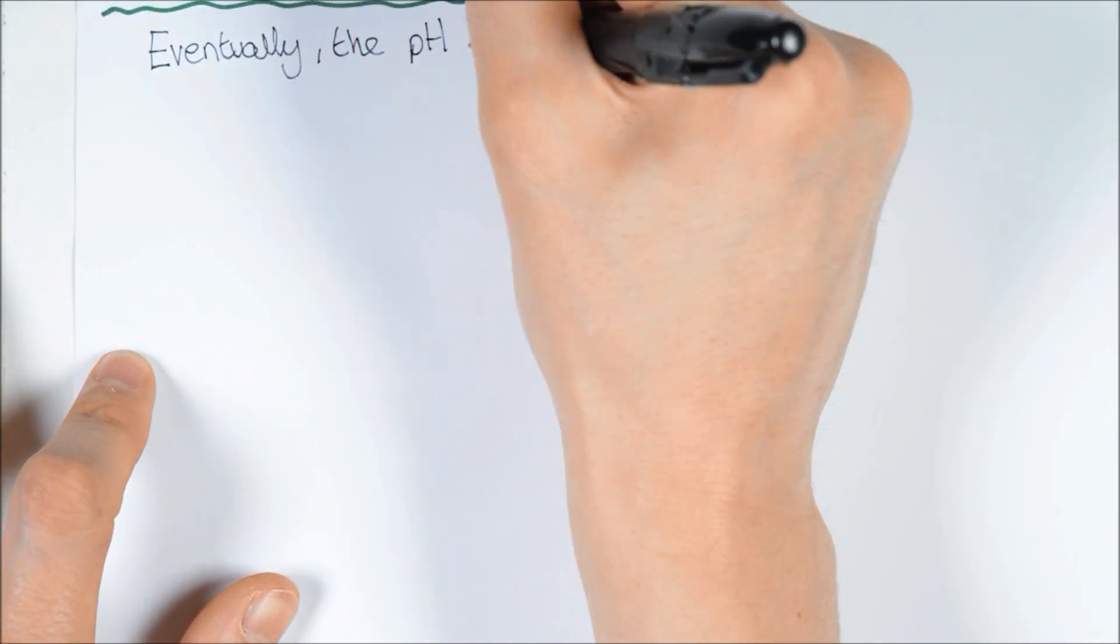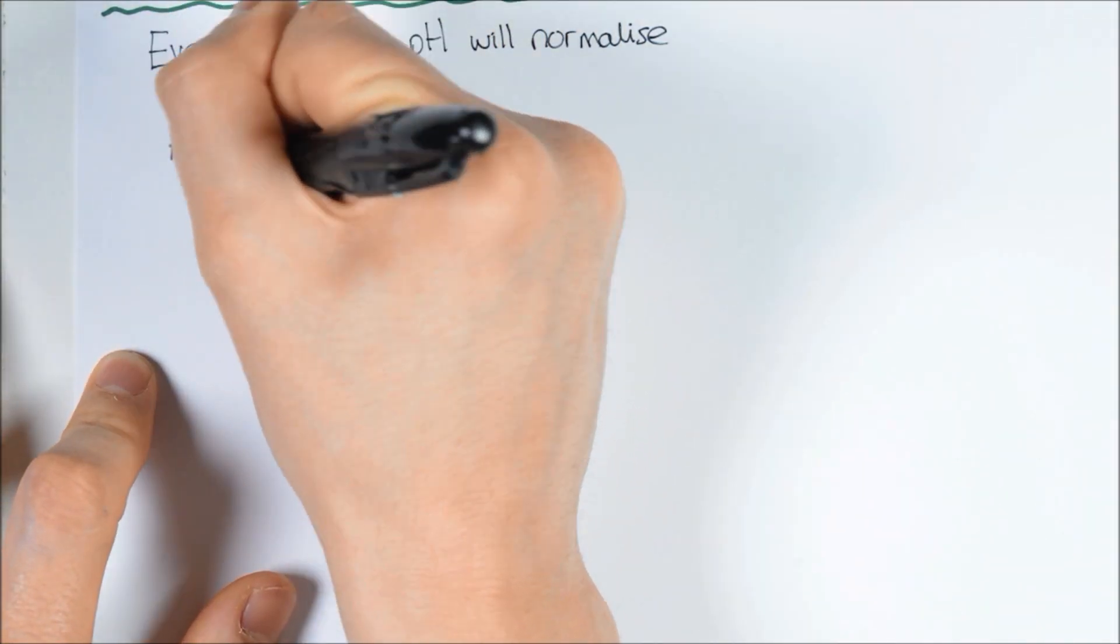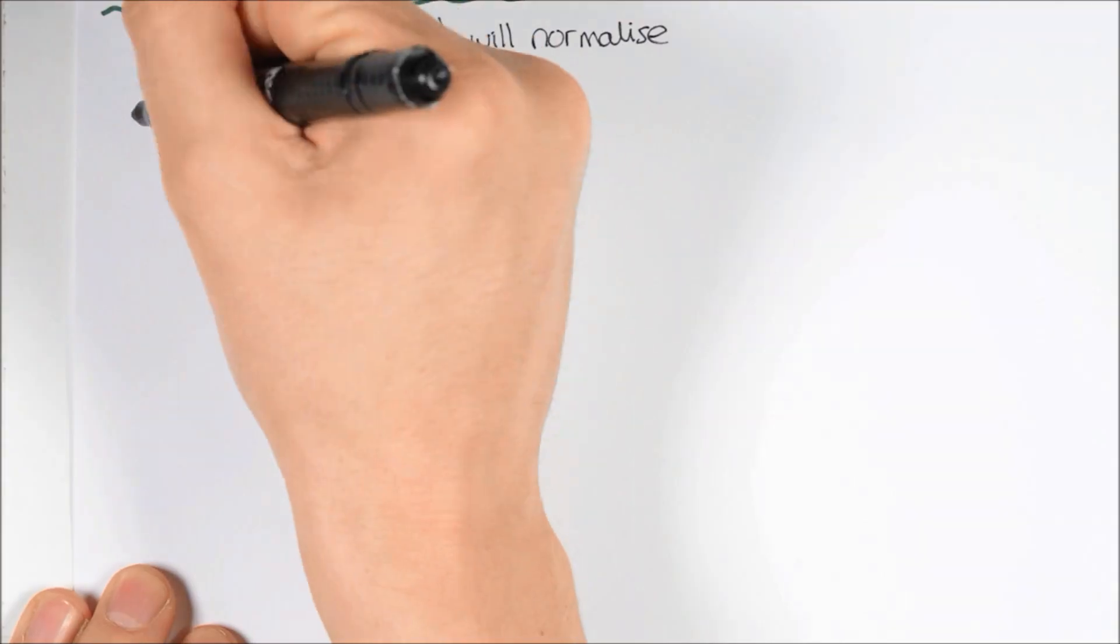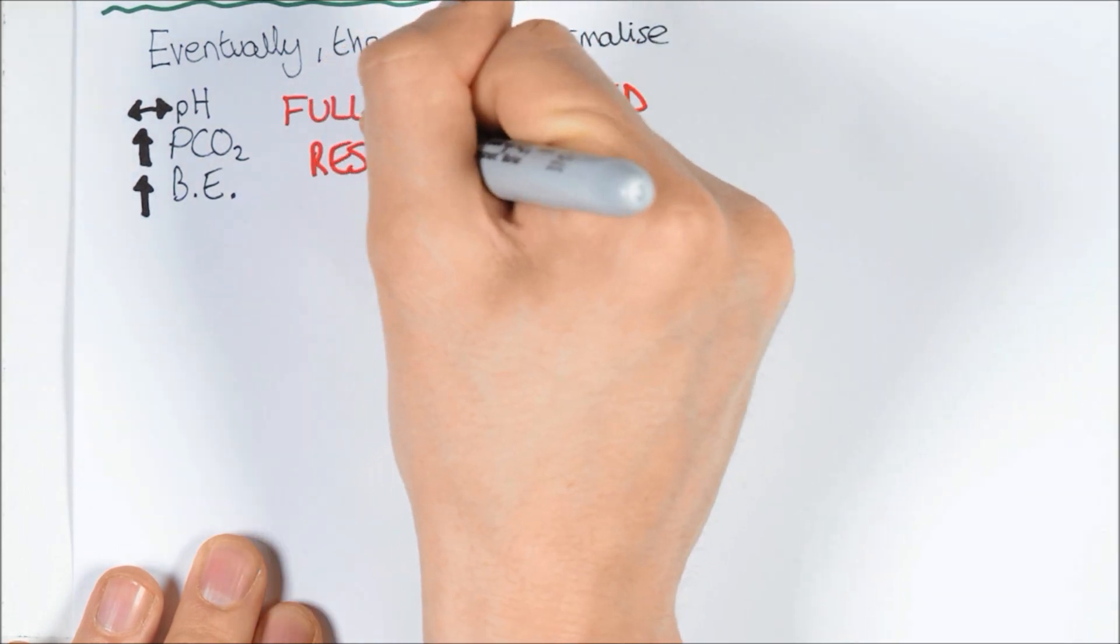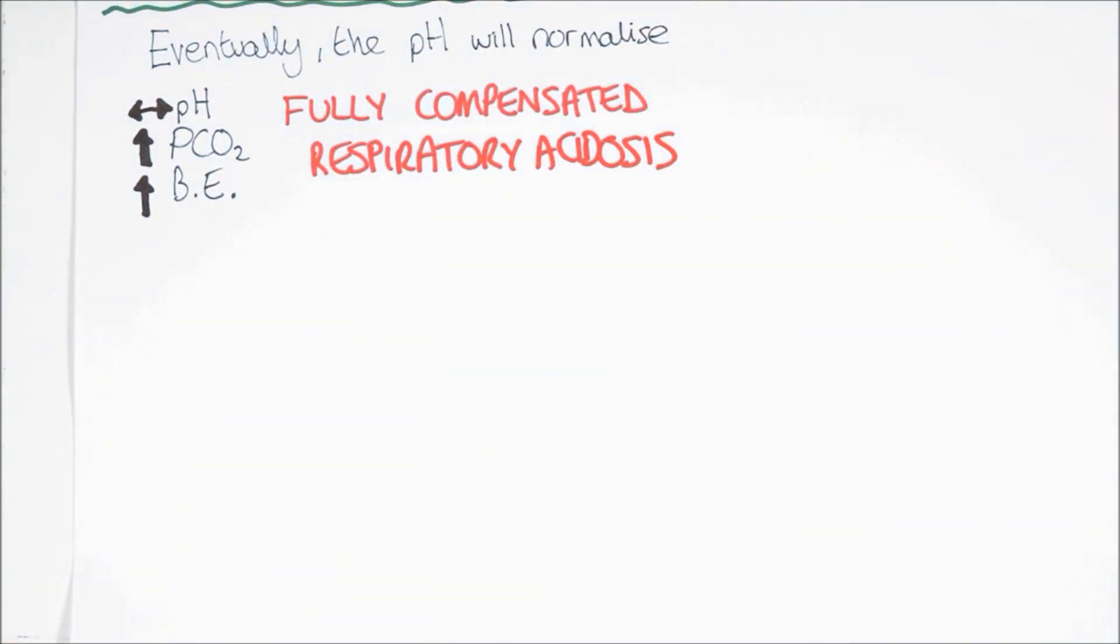Eventually, the compensation will be enough to return the pH to within the normal range. Once this happens, the blood gases would show a normal pH, a high PCO2, and a high base excess. Now the patient could be classified as having a fully compensated respiratory acidosis.